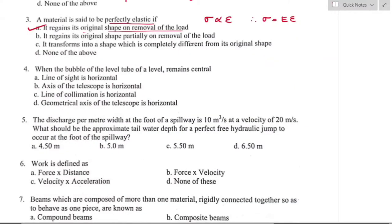Question number four: when the bubble of a level tube remains central, it indicates the line of sight is horizontal. Option A is the right answer. The line of sight is the sighting or pointing line of a telescope, defined by the optical center of the objective and intersection of the crosshair.